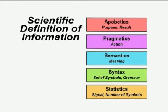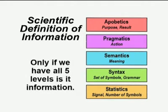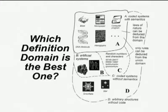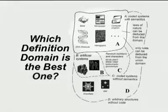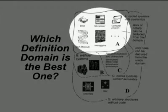So if we find in an unknown system all the five levels of information, then we are sure it is a system with information. There are many definitions possible, but let me say the definition domain A is the right one in a scientific way.